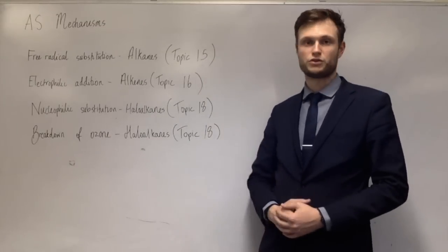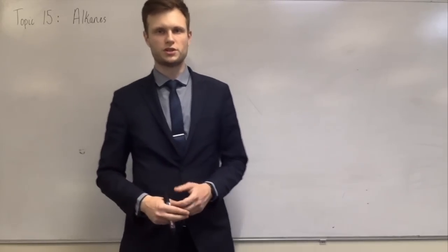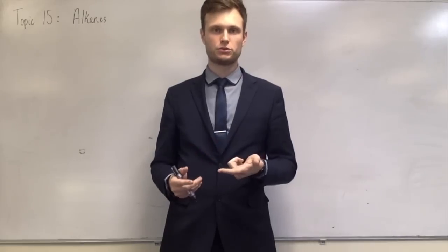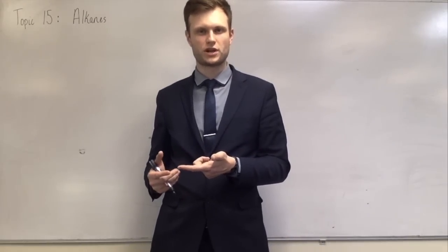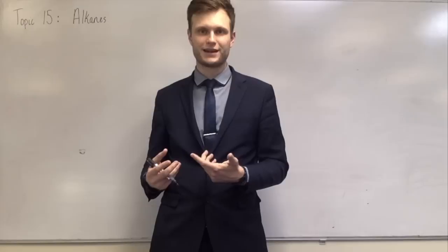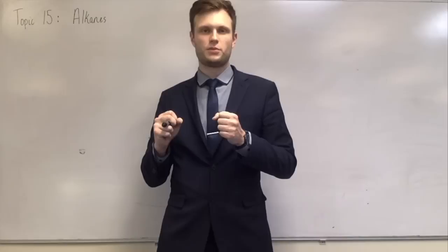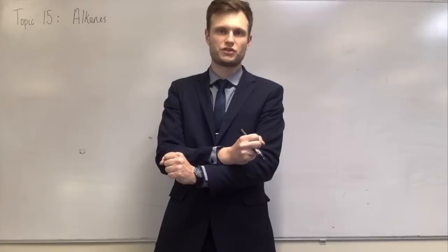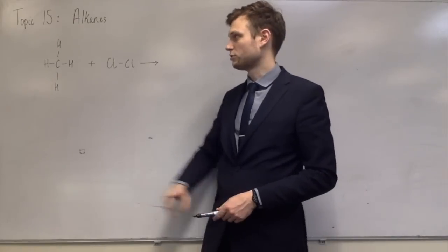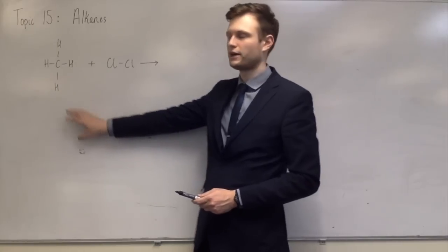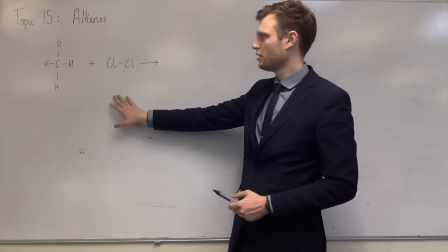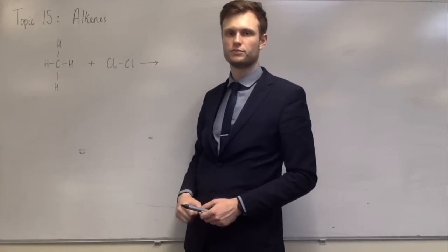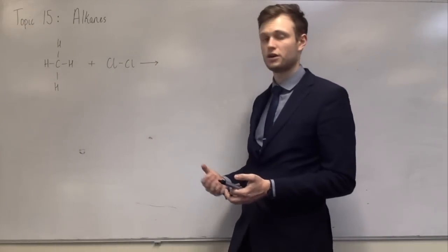First up, free radical substitution. This is a reaction between an alkane and a halogen. It's called radical because it contains radicals — species with an unpaired electron. It's called substitution because one of the hydrogens from the alkane is substituted with one of the halogens, so they swap over. One example would be methane reacting with chlorine. The chlorine and one of the hydrogens swap, giving products chloromethane and hydrogen chloride. This is the overall equation.